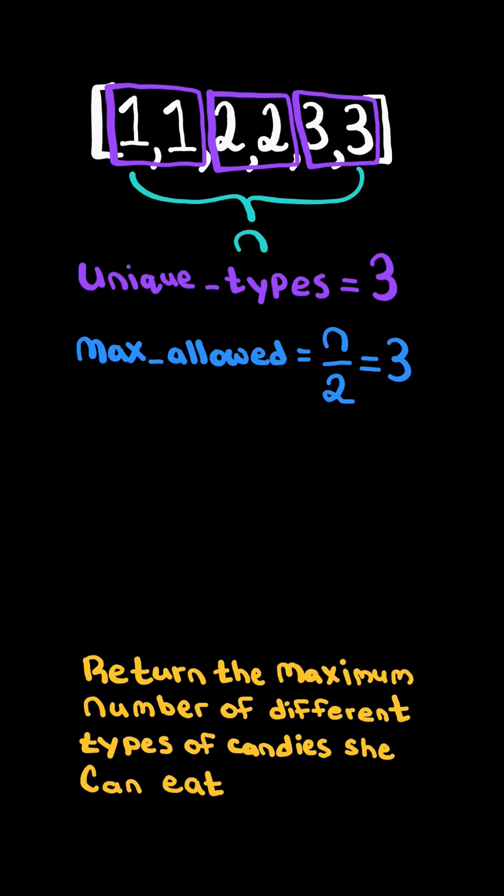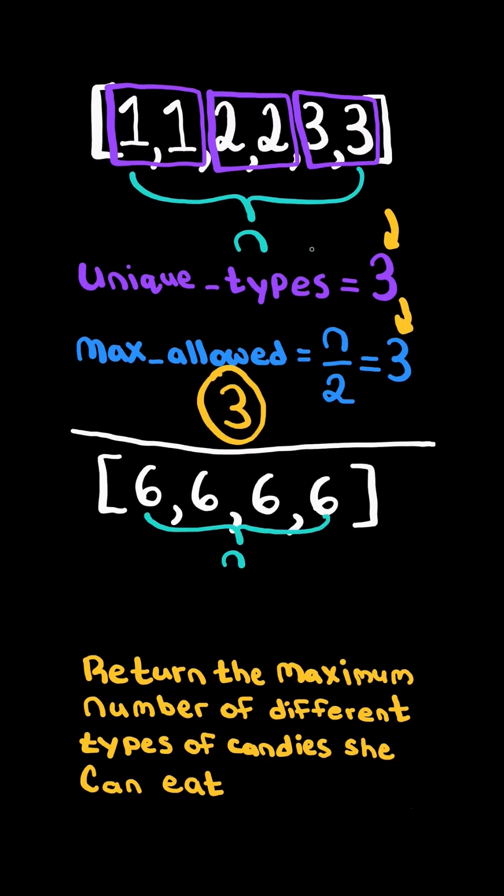Return the maximum number of different types of candies she can eat. In this case, there are three types of candies and she is allowed to eat all three of them, so we return three. Consider this new example.